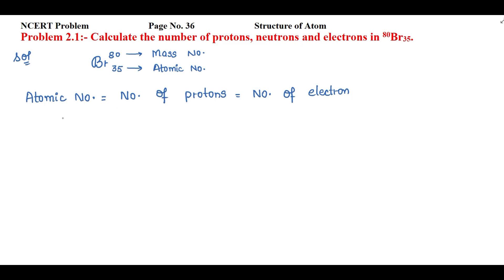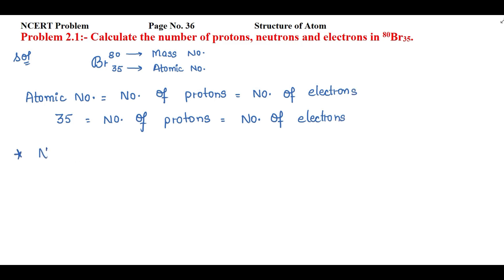The atomic number is 35, which means the number of protons is 35, and the number of electrons is also 35.